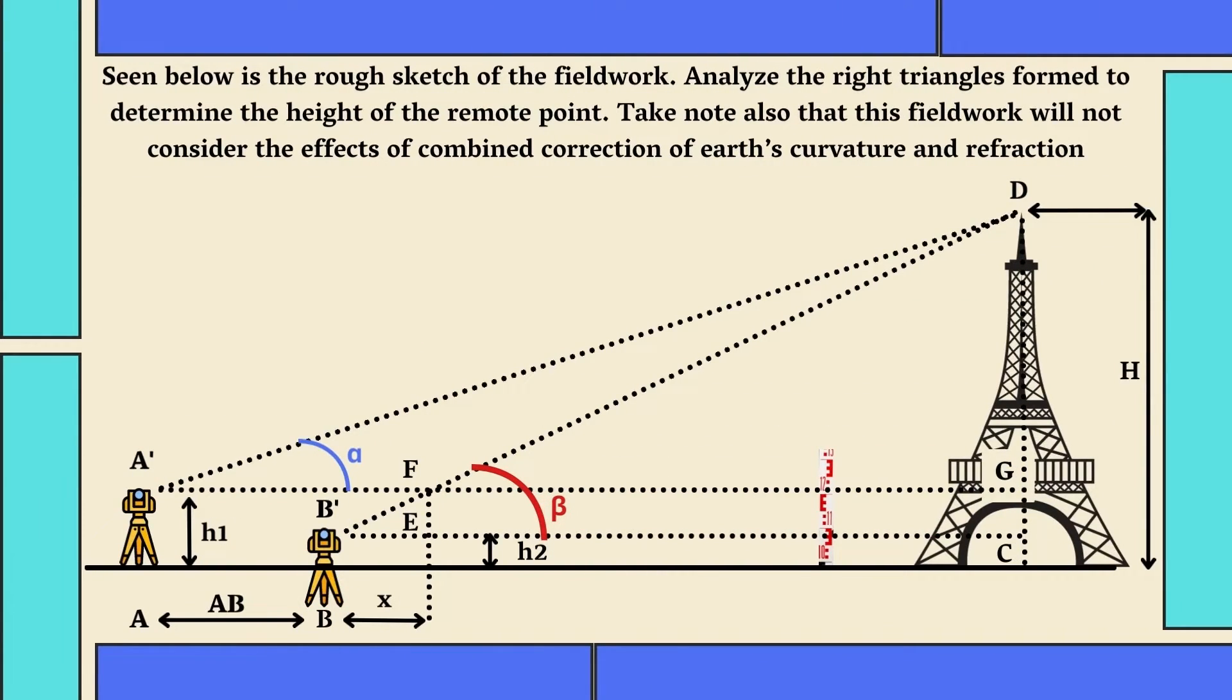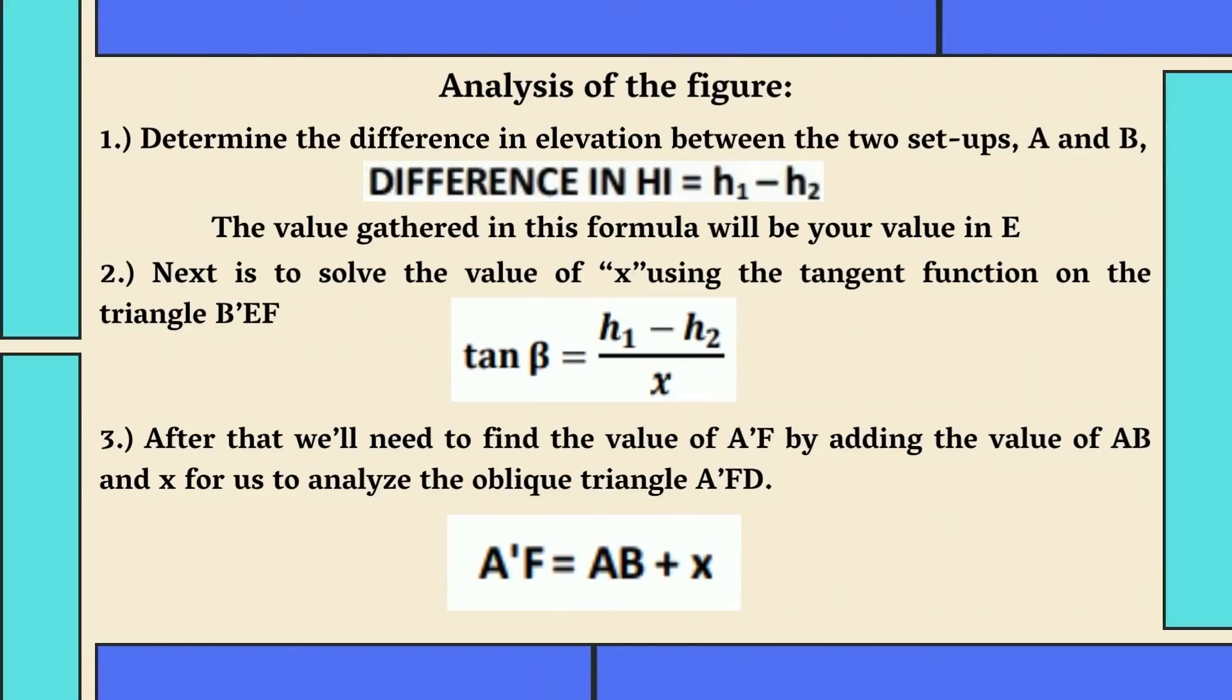Seen below is the rough sketch of the fieldwork. Analyze the right triangles formed to determine the height of the remote point. Also, take note that this fieldwork will not consider the effects of combined correction of Earth's curvature and refraction. Analysis of the figure: First, we'll determine the difference in elevation between the two setups A and B by using this formula. Difference in HI is equal to H1 minus H2. The value gathered in this formula will be your value in E.